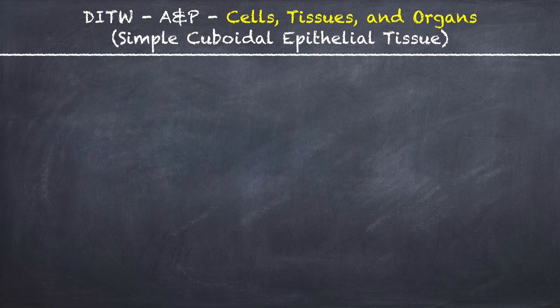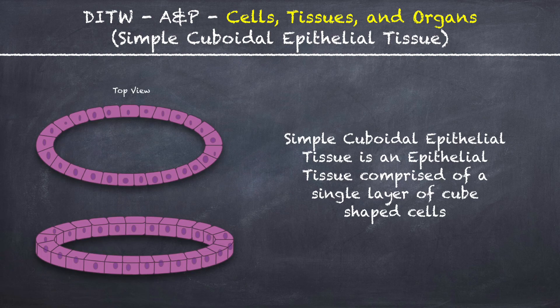This is DITW Anatomy and Physiology and you are watching the video on simple cuboidal epithelial tissue. Simple cuboidal epithelial tissue is an epithelial tissue comprised of a single layer of cube-shaped cells.